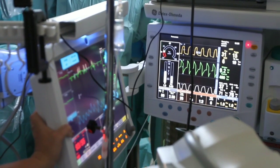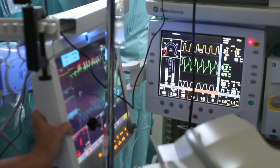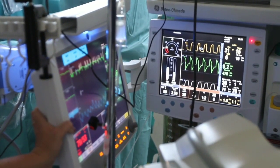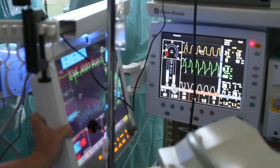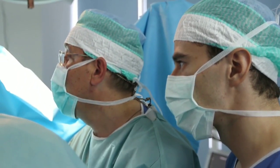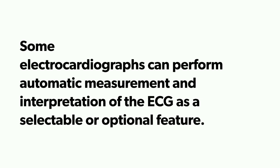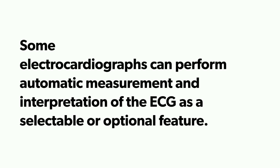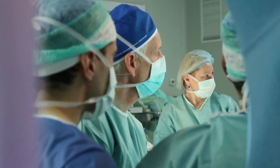Multi-channel electrocardiographs record signals from two or more leads simultaneously and are frequently used in place of single-channel units. Some electrocardiographs can perform automatic measurement and interpretation of the ECG as a selectable or optional feature.